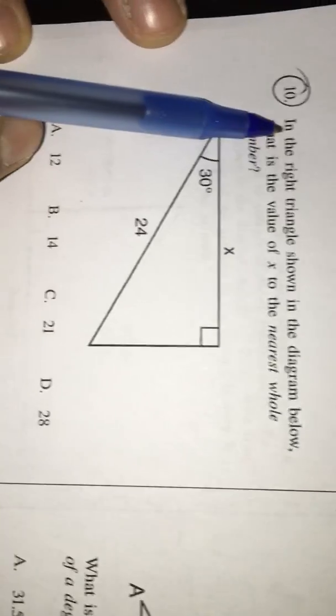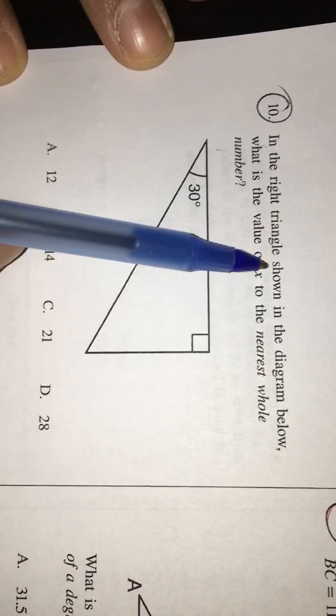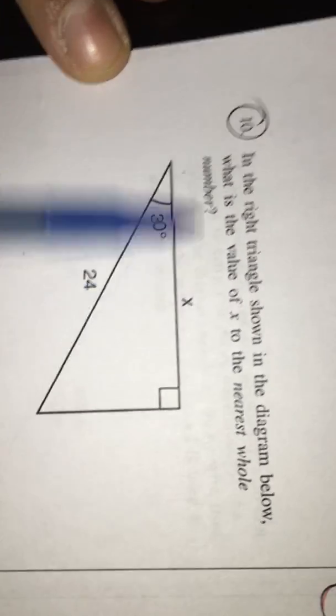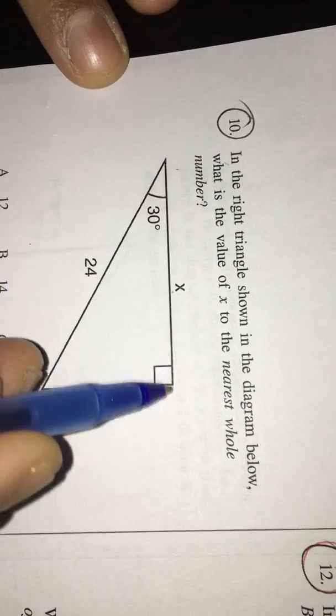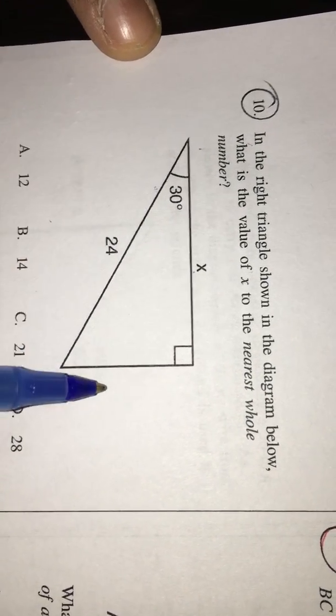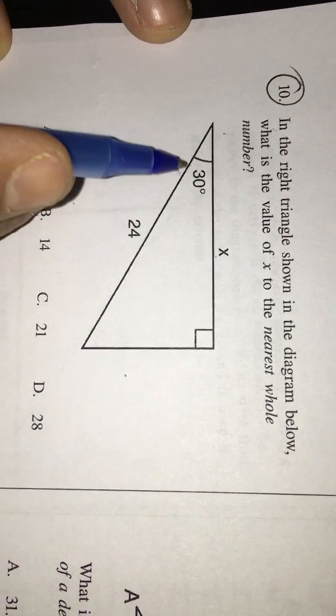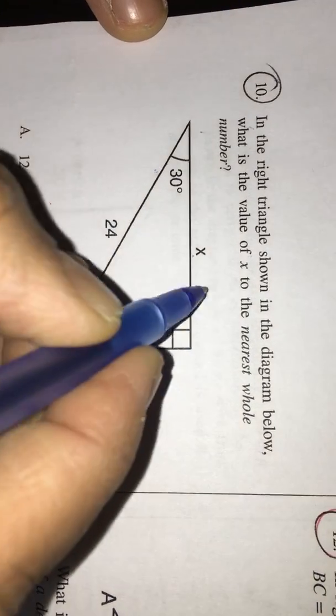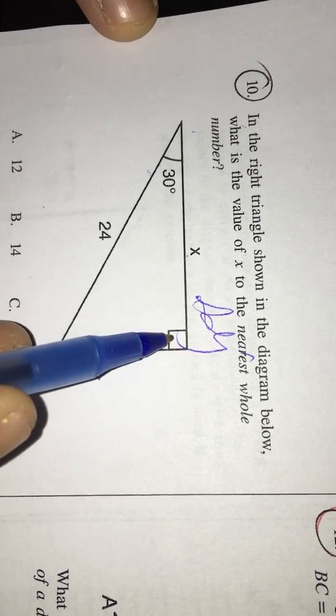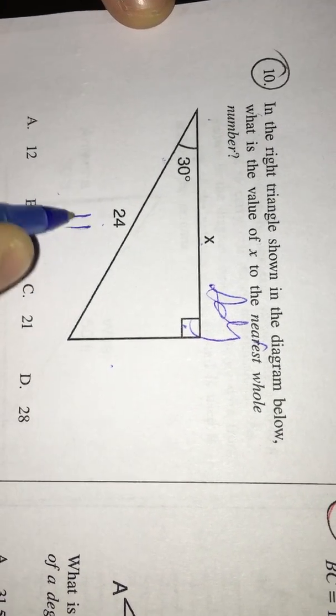In this 10th question, in the right triangle shown in the diagram below, what is the value of X to the nearest whole number? X is this side. So, the given angle is 30. For 30, this is the opposite side, we don't need it. For this 30, this X is adjacent side. And opposite to 90 degrees, this 24 is hypotenuse.